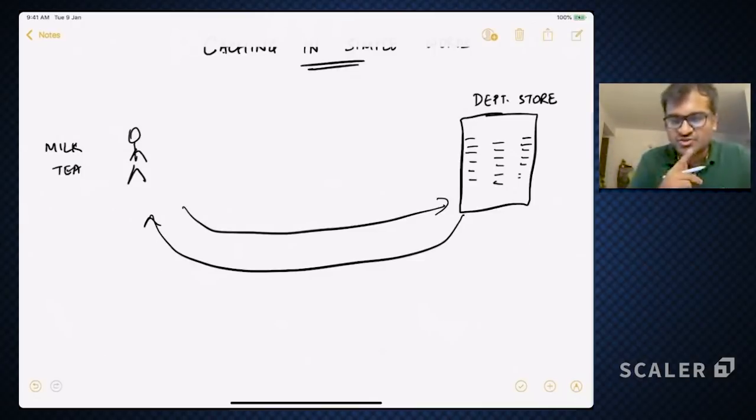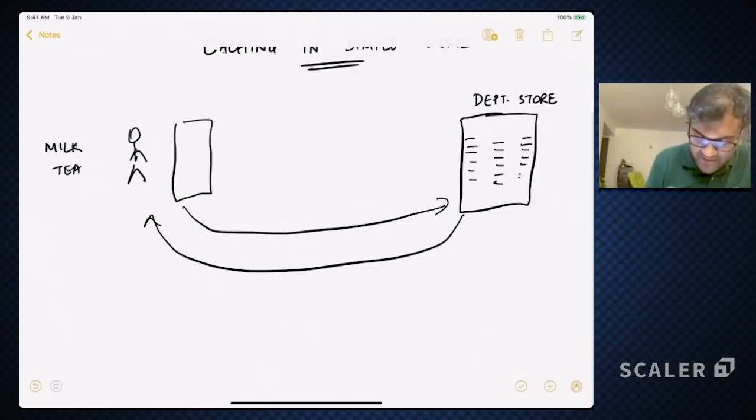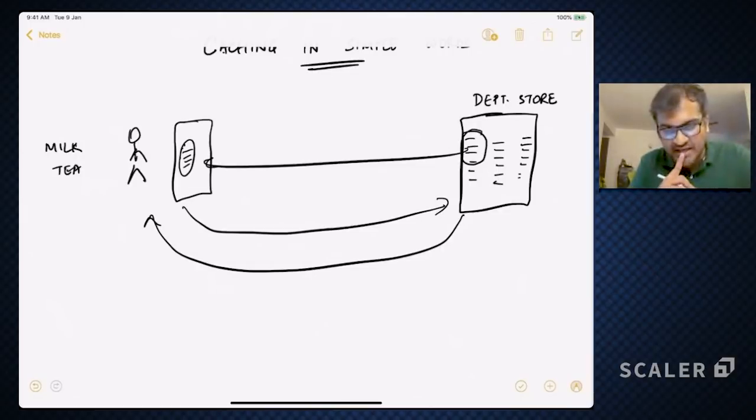However, one thing which strikes me is I can buy a refrigerator, a fridge which stays in my house only, where I can buy a few milk cartons at a time and store it here. And when I'm making milk tea now, then as long as there is some milk present in the fridge, I can use it from here. If there is no milk present in the fridge, then I go to the department store and buy the next set of cartons of milk.